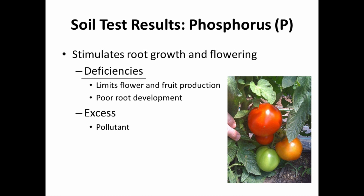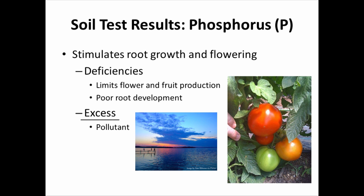There's not a plant symptom associated with too much phosphorus, but it is a really important pollutant of our water bodies in the state and throughout the United States. So we like to keep our phosphorus just at the level where it's critical for plant growth. If we put down too much, we run the risk of adding to the pollution of surface water bodies.